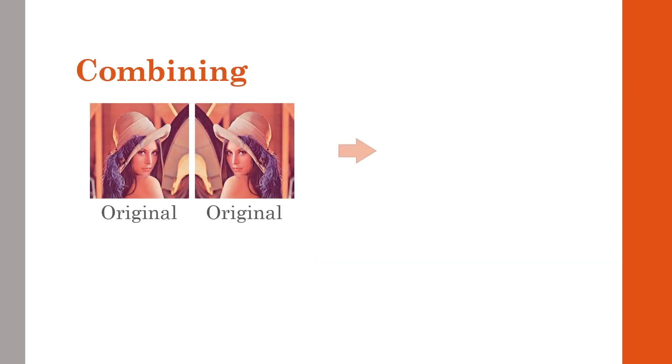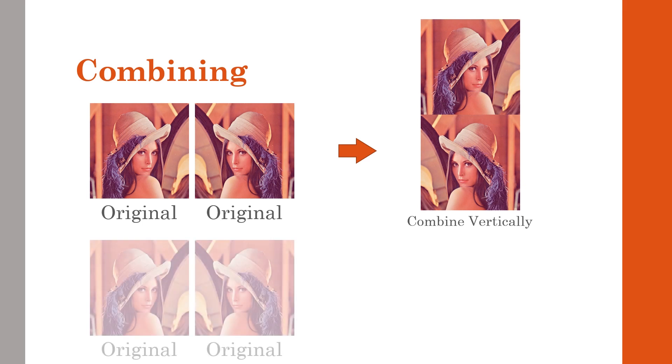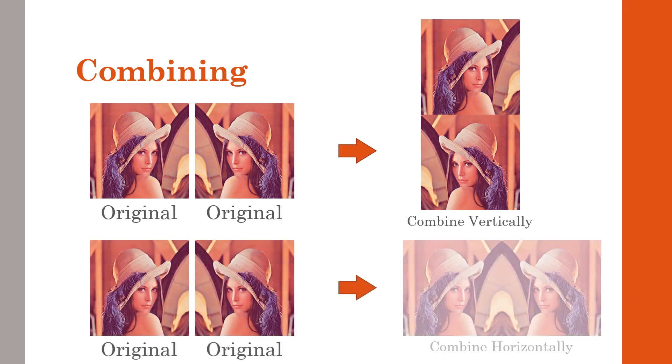Fifth, combining. In combining, we can join two different images together vertically or horizontally, as shown in this example.